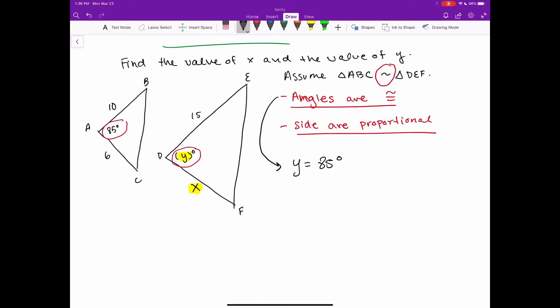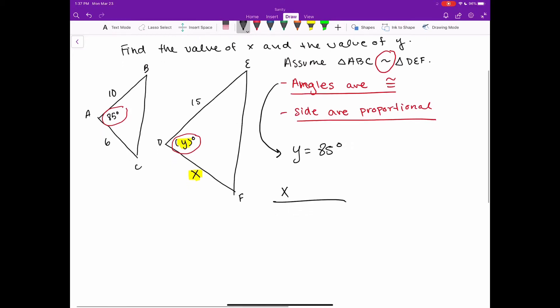Again, we're pointing to this fact that we know all of our corresponding angles in our similar figures have to be congruent. So y is 85. Let's look at x now.